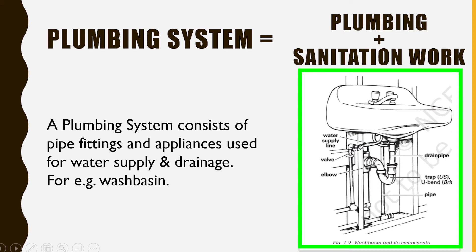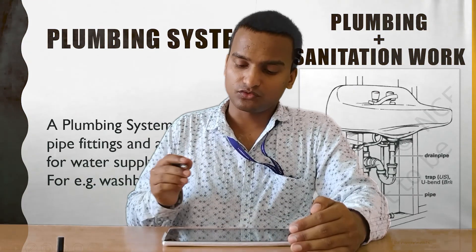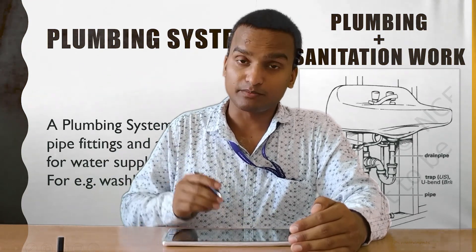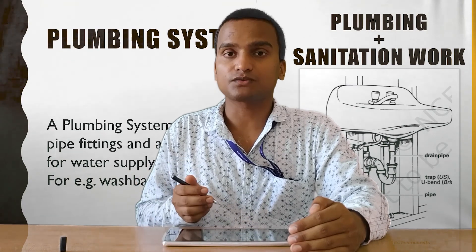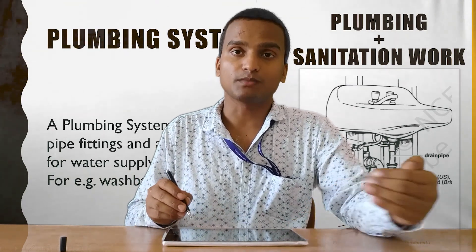In the plumbing system, plumbing is there and sanitation work is also there. You can see a pipe that carries potable water from the source to the user's house, and that water comes through fixtures like taps and faucets where we use the water. After using, the water is no longer fit for reuse and that wastewater is transferred through a drain pipe back to treatment. So in this picture you can see one system is plumbing — supplying potable water from source to users — and sanitation work is carrying of wastewater from users back to the treatment plant and then to the source.